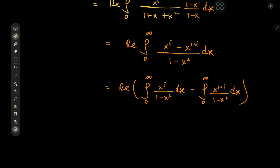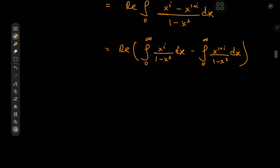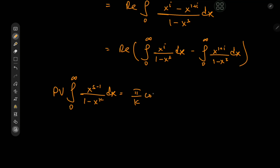Now we make use of a really cool result derived earlier: the principal value of the integral from 0 to infinity of x^(s−1) divided by 1 minus x^k, dx, equals pi/k times the cotangent of (pi·s)/k. Here our value of k is 3.